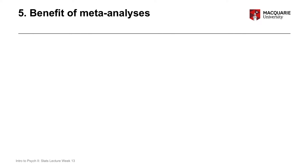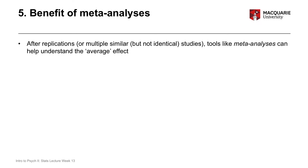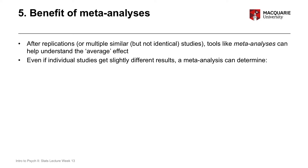Systematic reviews and meta-analyses are really the best way of getting a sense of the general message, general conclusions, and general findings from any individual field of work. Once you have multiple replication studies, a meta-analysis can help us understand what the average effect is aggregated across all of those individual studies. Even if individual studies give slightly different results — which they will, because that's how sampling variability works — a meta-analysis is really useful for getting a sense of the general picture.